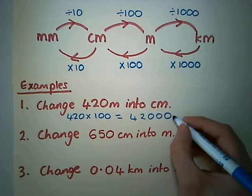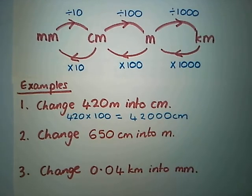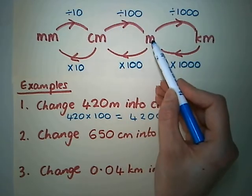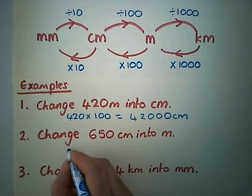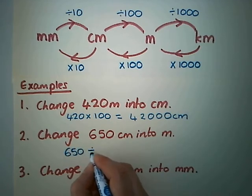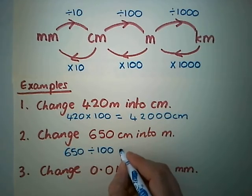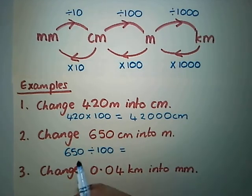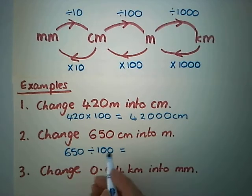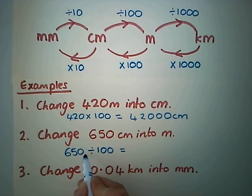If we're changing 650 centimeters back into meters, we're going this direction, so we're going to divide by 100. You would chop off two zeros if you had two zeros to chop off, but we don't.